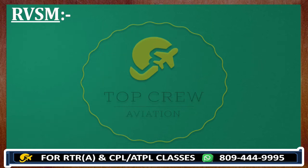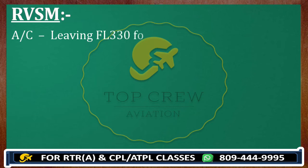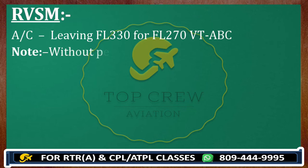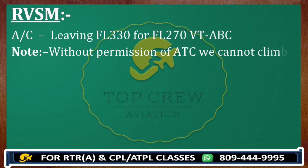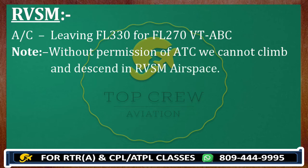You need to know how to communicate with ATC when leaving your flight level. You report: 'Leaving flight level 330 for flight level 270, Victor Tango Alpha Bravo Charlie.' Important reminder: without permission from ATC, no climb and no descent. You cannot climb and you cannot descend in RVSM airspace without prior ATC permission.